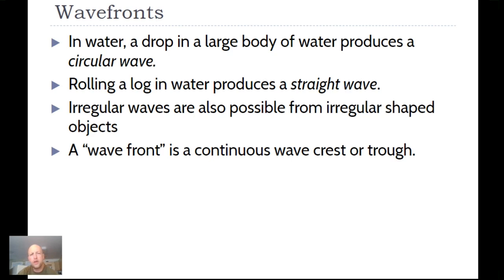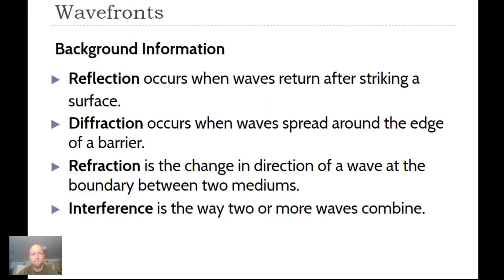If you want to produce a straight wave, you might look at rolling a log or pushing something straight forward. Irregular waves are also possible from irregular shaped objects. The wavefront is a continuous wave crest or trough — you're looking at either the top or the bottom, the highest point or the lowest point.